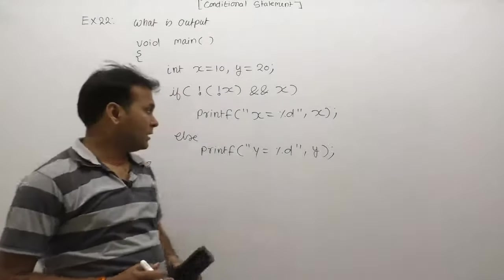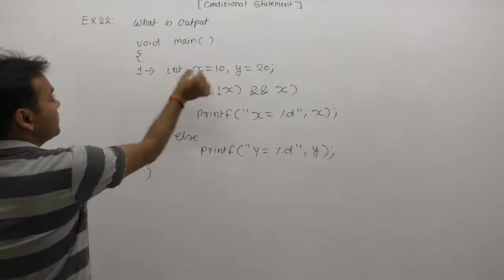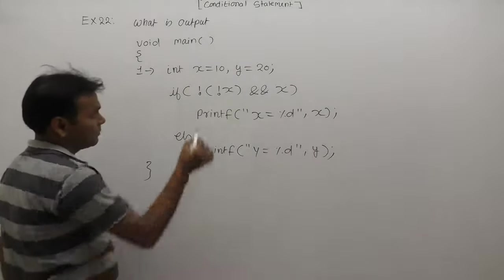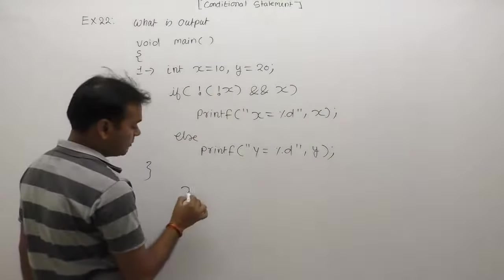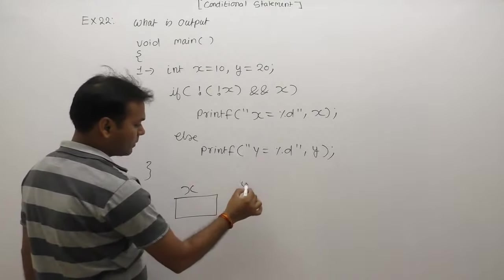Output of the given program: first of all we are declaring two variables which are of integer type, variable x and variable y, means two variables created, x and variable y.